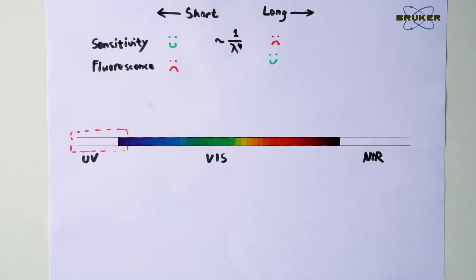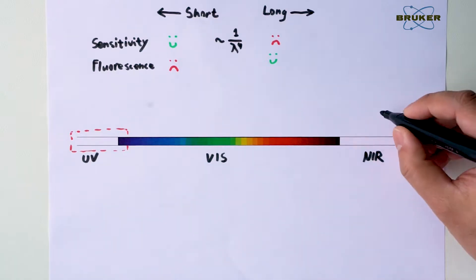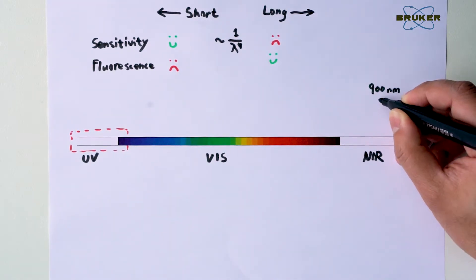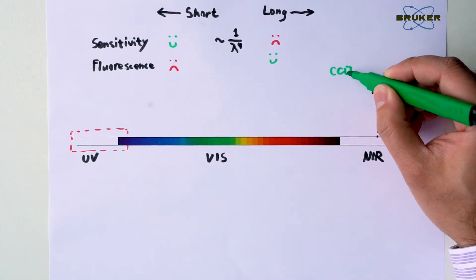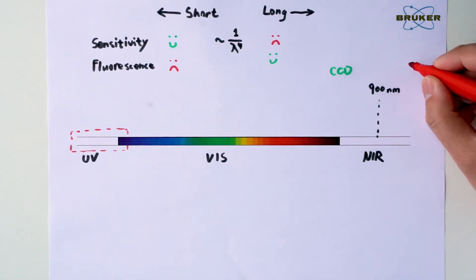But even if you choose a longer excitation wavelength, there is more to consider, such as detector sensitivity. The Euro-CCD detector can only detect the Raman peak below 1100 nm. That means a laser wavelength beyond 900 nm will need an infrared detector.